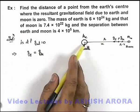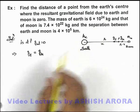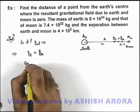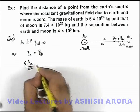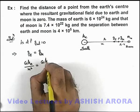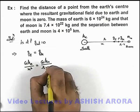If we substitute the expression for gravitational field at a distance x from the center of earth, it can be written as GM_e over x square, and it should be equal to GM_m over r minus x whole square.